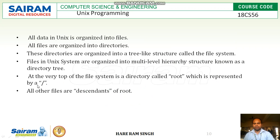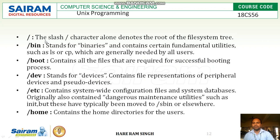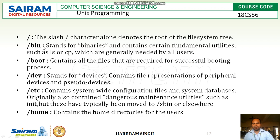All other files are descendants of root. The forward slash character alone denotes the root of the file system, called the root directory. Then /bin — bin stands for binaries and contains certain fundamental utilities such as ls or cp. These command files, ls and cp, will be present in /bin.